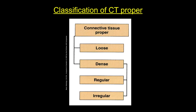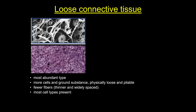Connective tissue proper can be subdivided based upon the proportion of fibers. So we have loose connective tissue, and dense connective tissue, which can be subdivided even further based on the arrangement of fibers into dense regular and irregular types. Now we'll discuss the appearance and characteristics of each type.